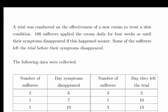In this presentation we are going to look at survival analysis using the Nelson-Aalen estimator. A trial was conducted on the effectiveness of a cream to treat a skin condition. 100 sufferers applied the cream daily for 4 weeks or until their symptoms disappeared, if this happened sooner. Some of the sufferers left the trial before their symptoms disappeared - censoring in other words.